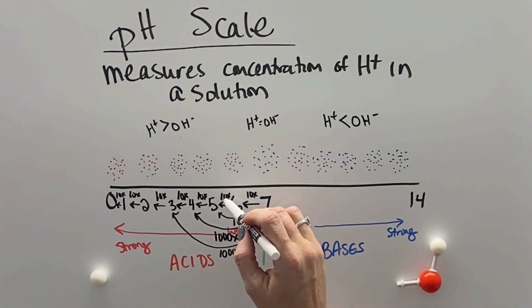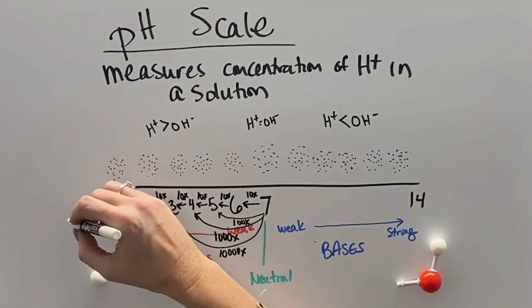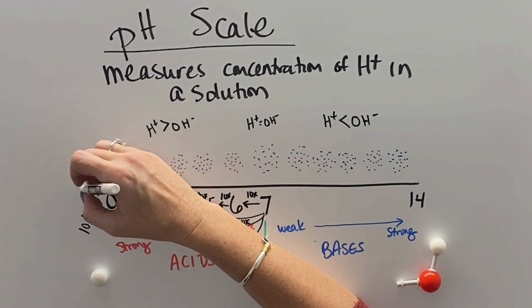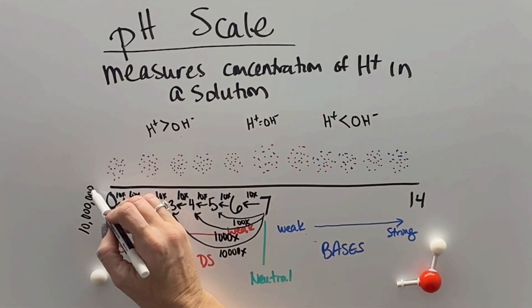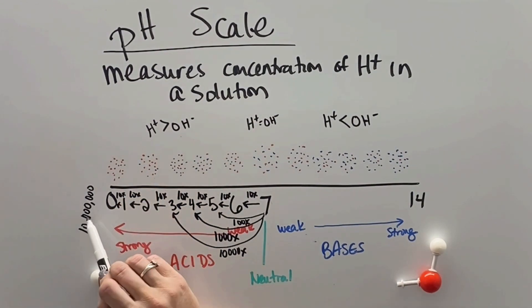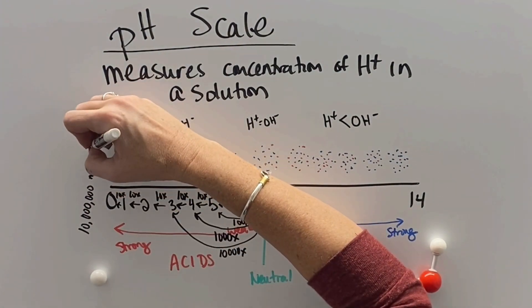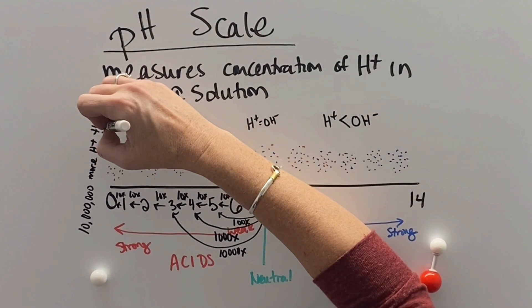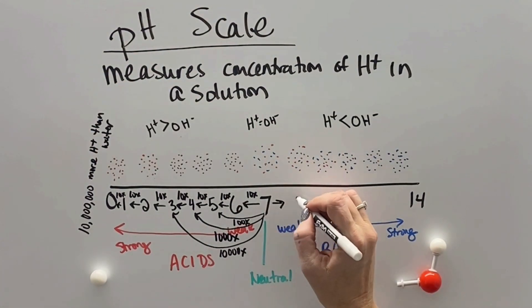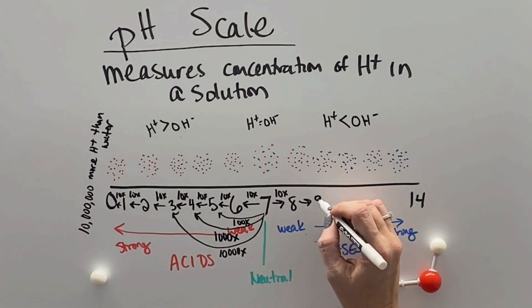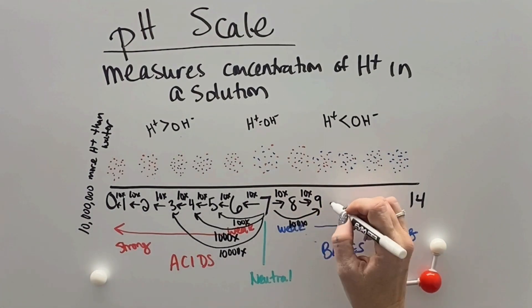So these chemicals, as we get farther and farther away from 7, get stronger and stronger and more and more dangerous. To the point that if you have something that has a pH of 0, then it has 10 million more free hydrogen ions in comparison to something that would be neutral 7.